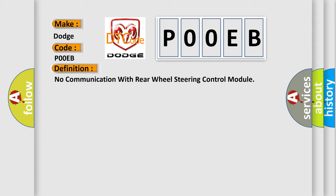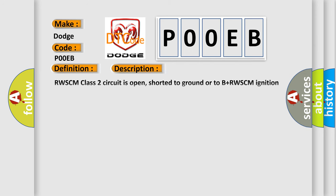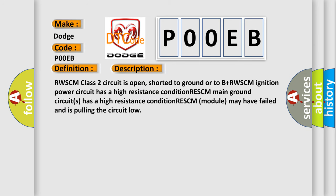And now this is a short description of this DTC code. RWSCM class 2 circuit is open, shorted to ground or to B plus. RWSCM ignition power circuit has a high resistance condition. RWSCM main ground circuits has a high resistance condition. RWSCM module may have failed and is pulling the circuit low.